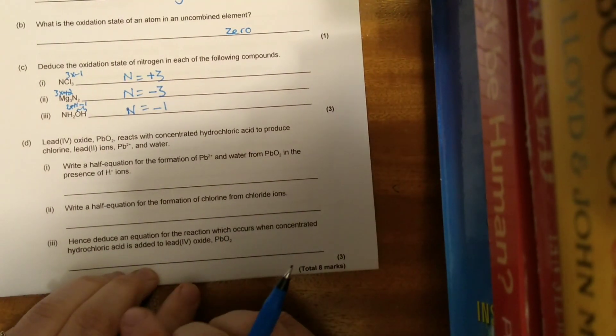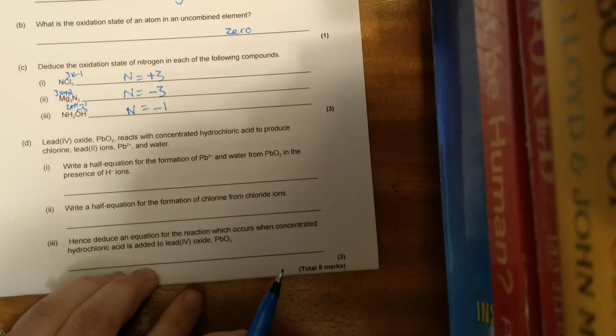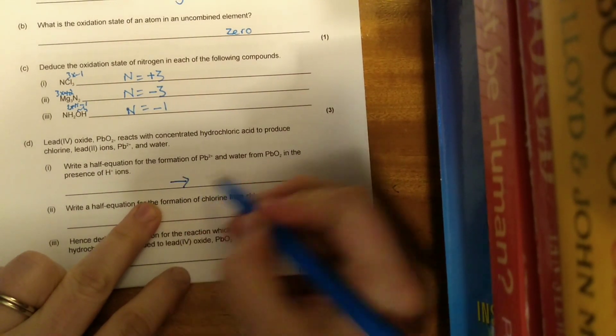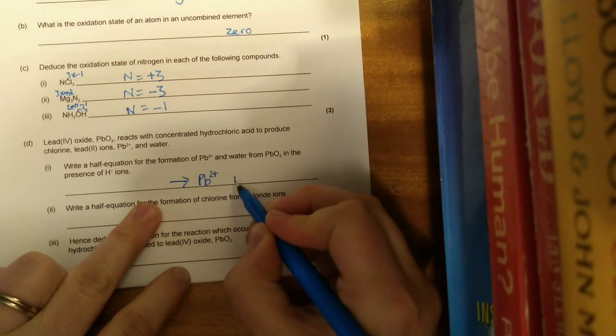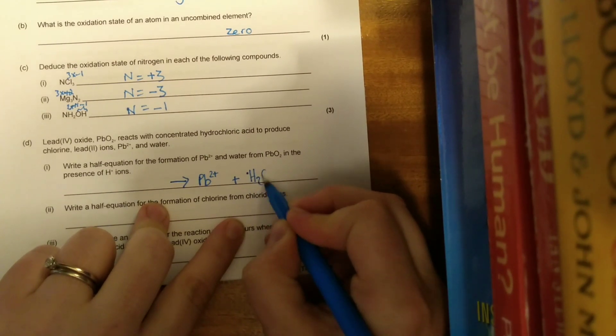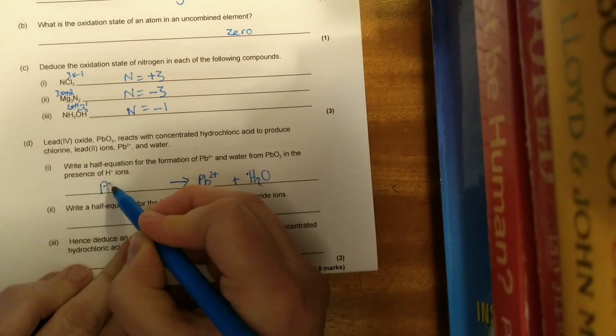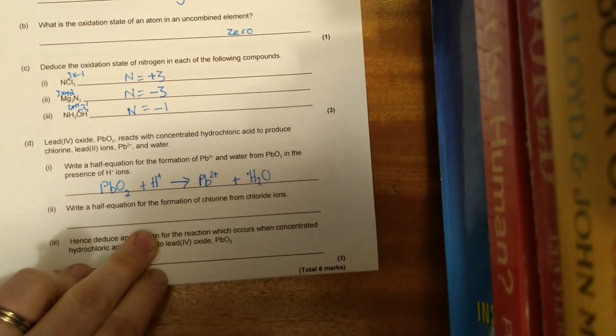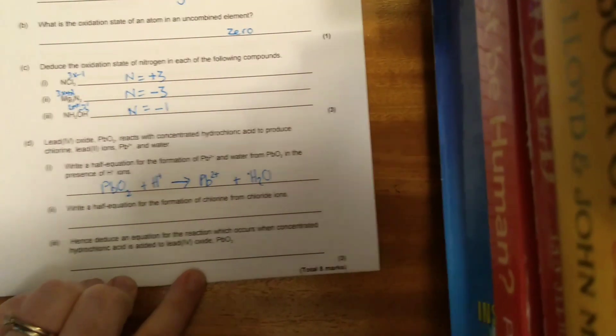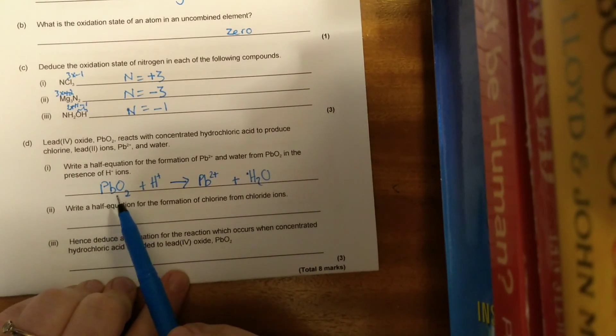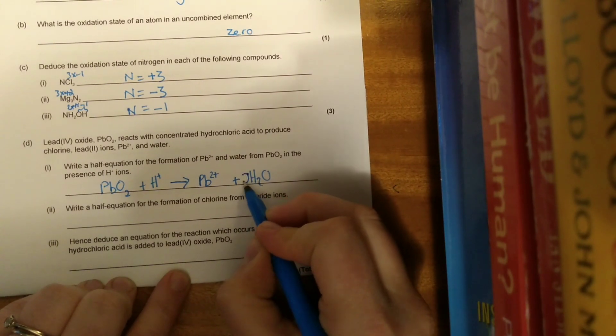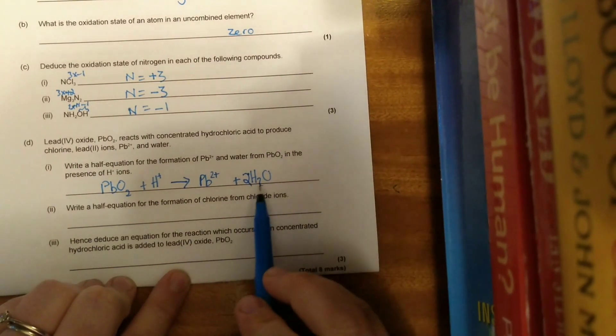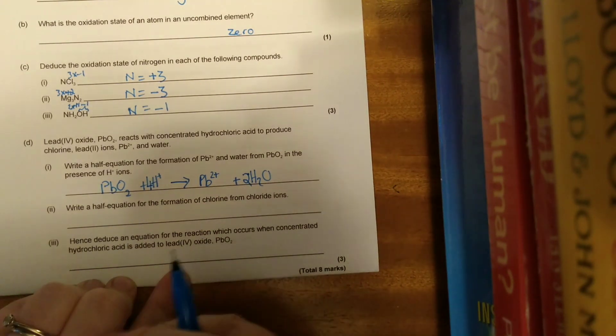We're then asked about lead oxide. We're told that the lead oxide reacts with concentrated hydrochloric acid to produce chlorine, lead 2 plus ions which is Pb2+, and water. Write a half equation for the formation of these ions and water from the lead oxide in the presence of hydrogen ions. We've given a lot of information there. We know that we are forming the lead 2 plus ions and water, and we know that it's coming from the lead oxide, and there's also going to be hydrogen ions there. We've given that information from the question.